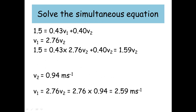Now I just need to solve the simultaneous equations. I have 1.5 equals 0.43v1 plus 0.40v2, and I know v1 equals 2.76v2. Substituting the v1 expression into the first equation gives 1.5 equals 0.43 times 2.76v2 plus 0.40v2, which equals 1.59v2 in total. Dividing both sides by 1.59, I get v2 equals 0.94 meters per second. Then since v1 equals 2.76v2, that gives 2.76 times 0.94, which is 2.59 meters per second.